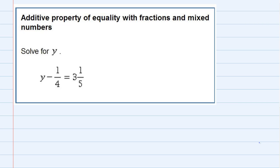So I've got fractions and mixed numbers but since I'm asked to use the additive property all I need to do is get the y by itself so I need to get rid of that minus 1 fourth.